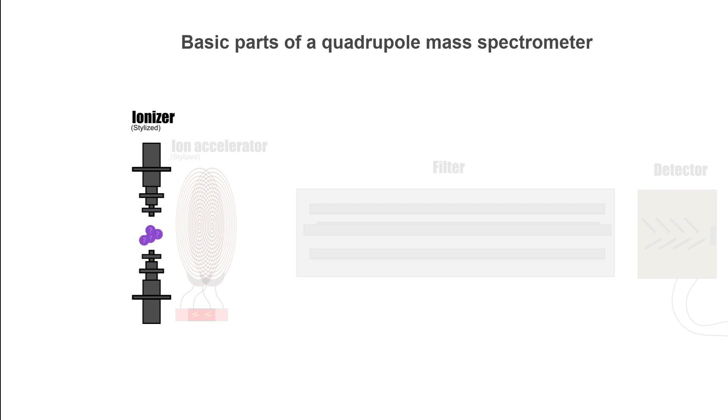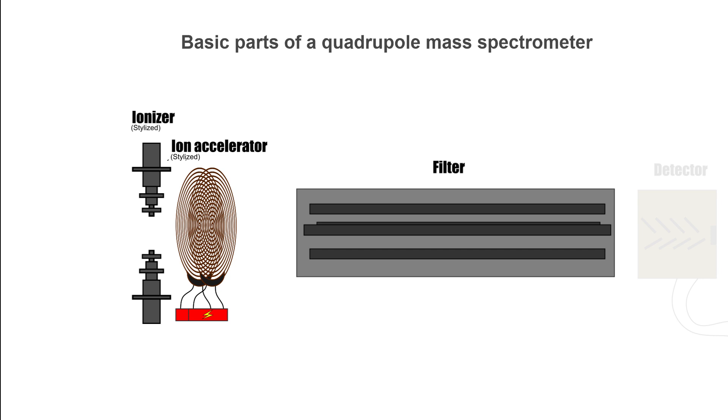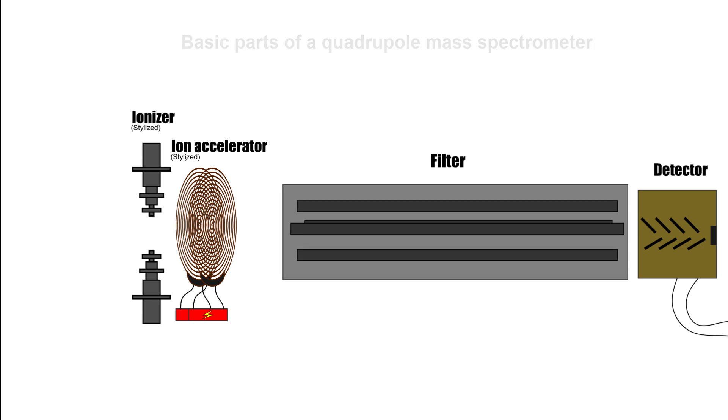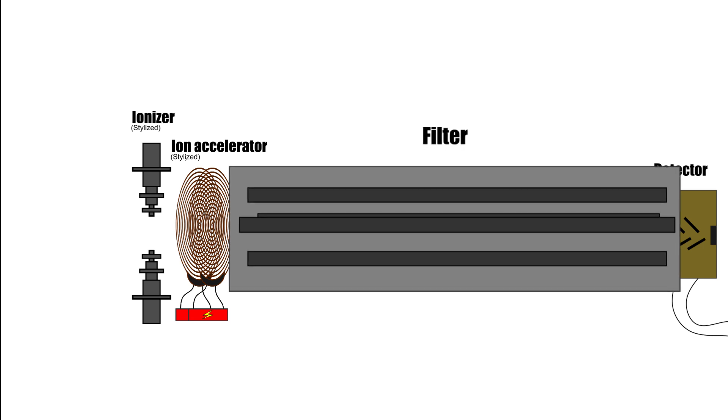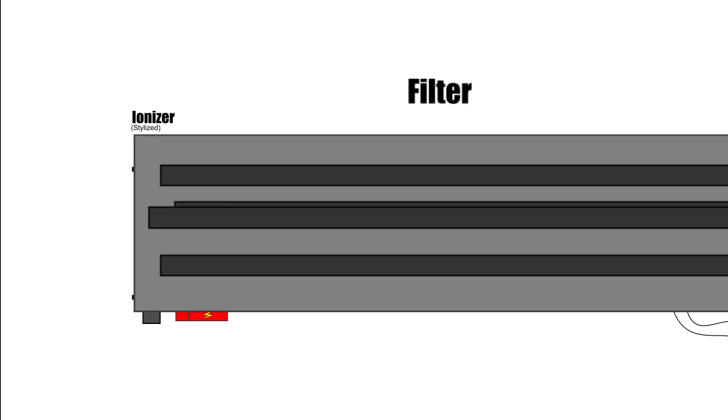In some instances, the ionization process will cause the molecule to fragment to smaller pieces. But in both cases, we now have ionized particles. These particles are then accelerated by an ion accelerator and introduced into the mass filter section. After the filter section, they are then detected by an ion detector. But let's go back to the filter section because this is where things get a little complicated. And this is where you'll also see the technical brilliance of the quadrupole mass spectrometer.